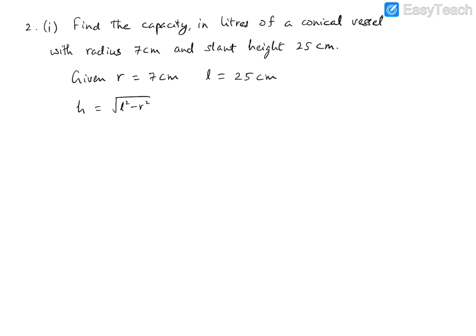Using h = √(l² - r²) = √(25² - 7²) = √(625 - 49) = √576 = 24. So the height h is 24 cm.